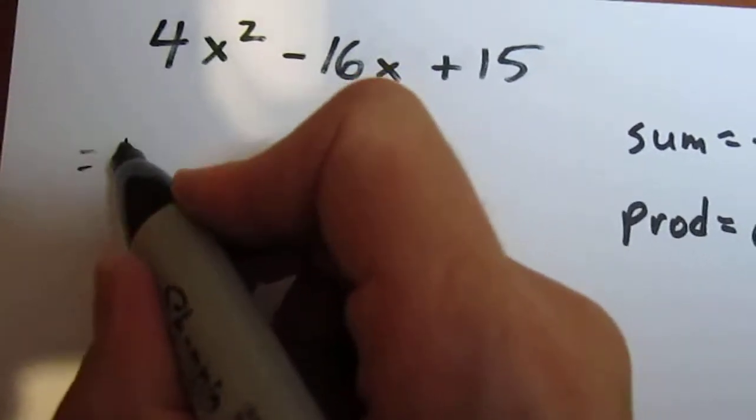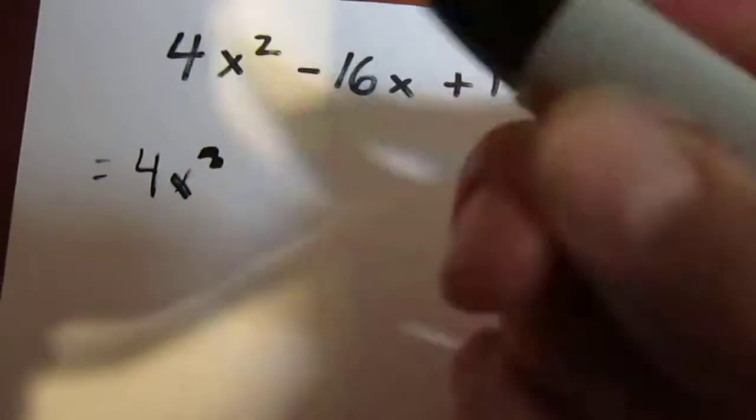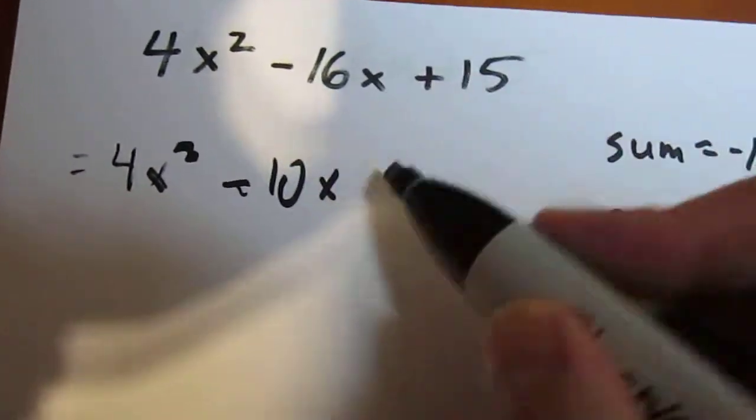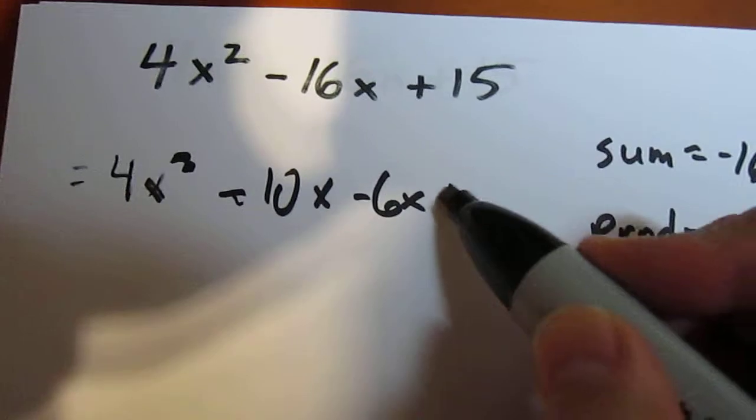So I come over here and I say this is equal to 4x squared minus 10x minus 6x plus 15.